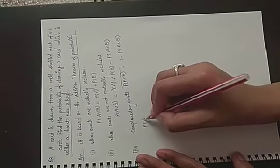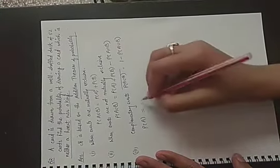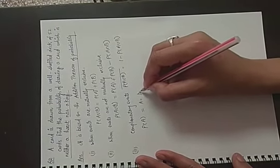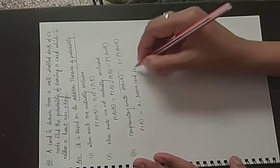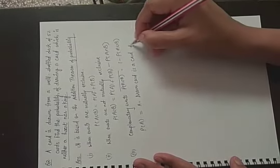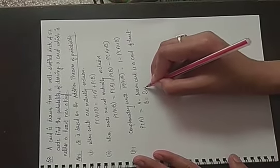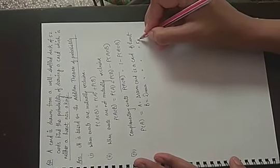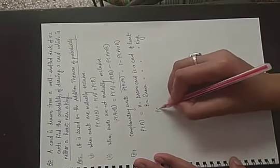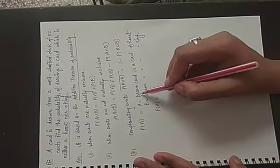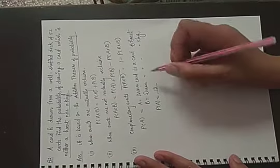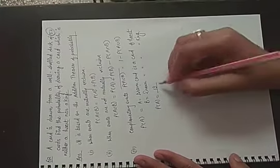So, for example, let event A be that the drawn card is a card of heart. And let B be that the drawn card is a card of king. Now, what is the probability that the card we draw will be a heart? Total number of hearts is 13, and total number of cards are given 52.